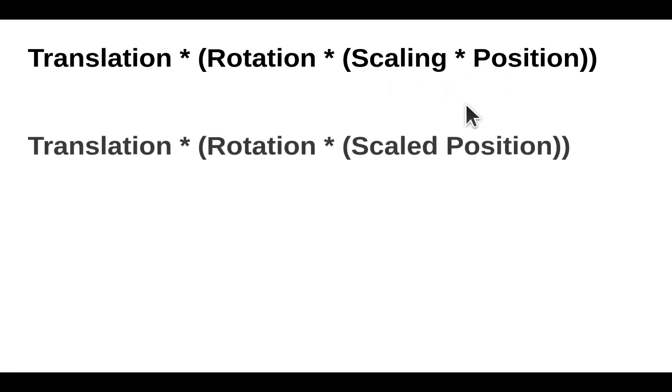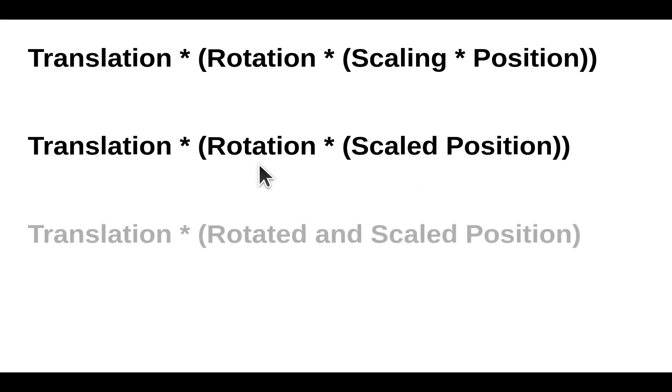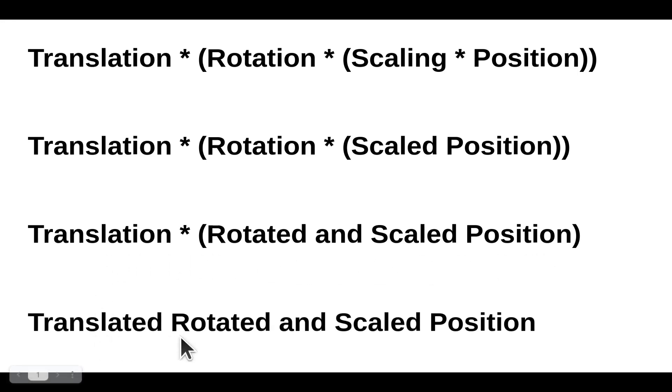The next topic is the combination of transformations. In many cases we want an object to be scaled, rotated, and then translated, meaning we have three matrices — one for each transformation — and we want to apply them one by one on the position vector. After multiplying the scaling matrix by the vector we get a scaled position, then multiplying by the rotation matrix gives a rotated scaled position, and finally multiplying by the translation matrix gives a translated rotated and scaled position. The order of multiplication is critical.